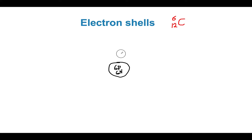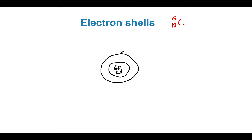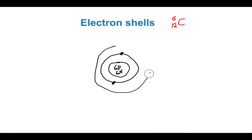Where do the electrons go? The first 2 go on the 1st shell, and we've got 4 more left, which go on the second shell.